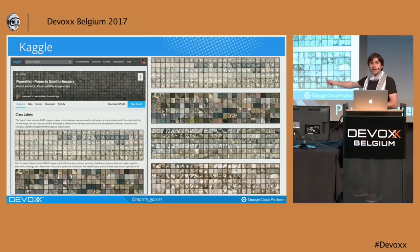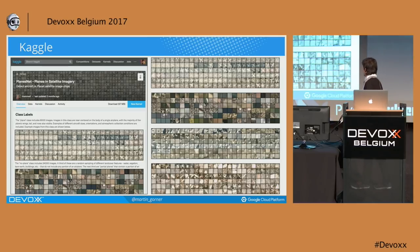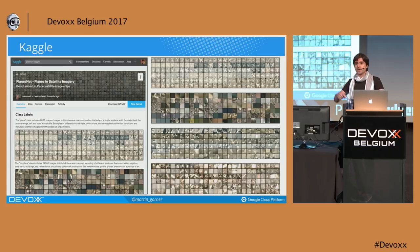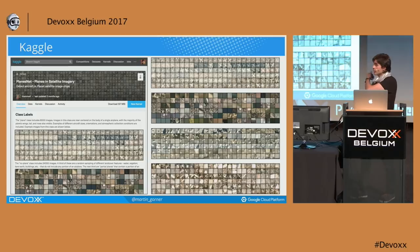I like plane spotting, so I decided to build a neural network that can spot airplanes in aerial imagery. First, a trip to Kaggle.